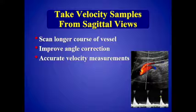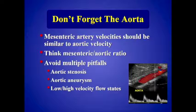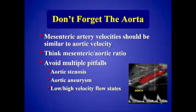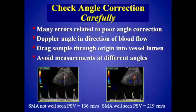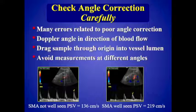Take velocity samples from the sagittal views — this is probably the most common mistake I see. From the sagittal view you can see a longer course of the vessel, improve your angle correction, and get accurate velocity measurements. Don't forget the aorta — velocity should be similar in the mesenteric vessels to the abdominal aorta, so think about the mesenteric-aortic ratio as a check. This avoids pitfalls from aortic stenosis (which can increase velocities and cause tardive waveforms) and aortic aneurysms (which can decrease normal velocities). Check your angle correction carefully — the Doppler angle should be in the direction of blood flow. Drag the sample volume through the origin into the vessel lumen, and avoid taking multiple measurements at different angles. Take few measurements and carefully angle correct.